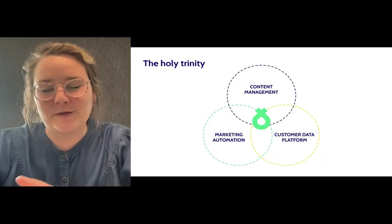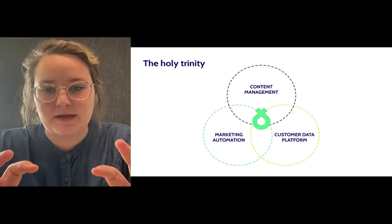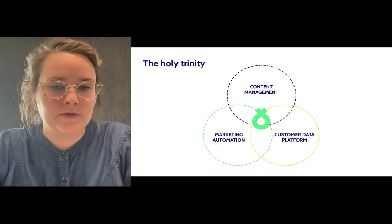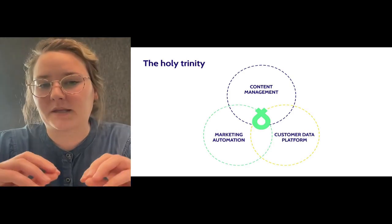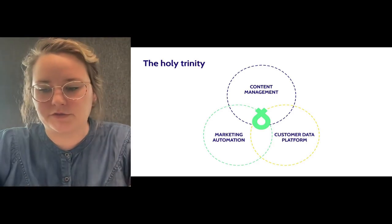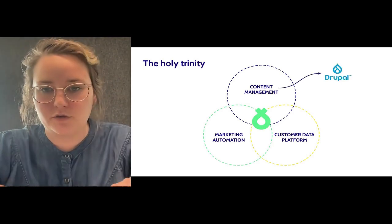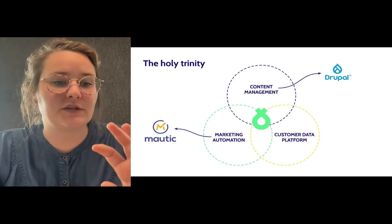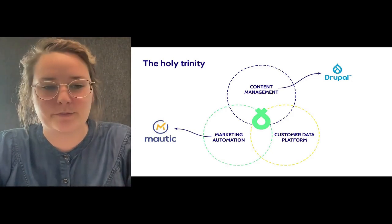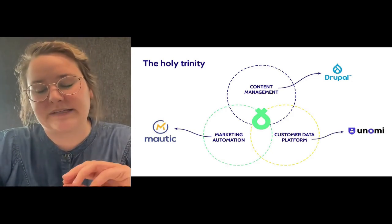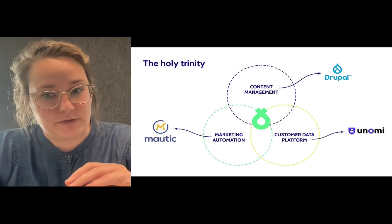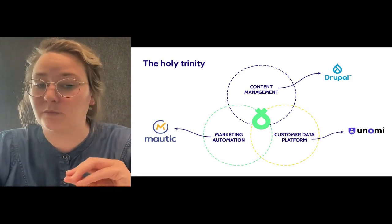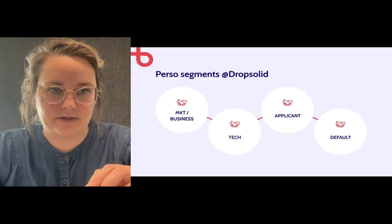First of all, we always start with the holy trinity. You need content management, a customer data platform, and marketing automation. These three components are needed to make sure personalization works. Content management we do with Drupal, marketing automation we do with Mautic, and the customer data platform we do with Unomi. We need all three of those to make sure that we can personalize the Mautic emails.